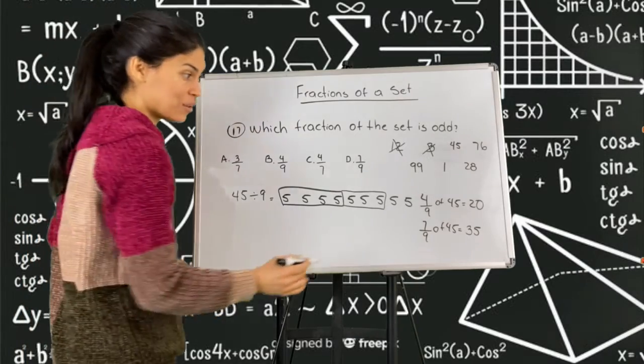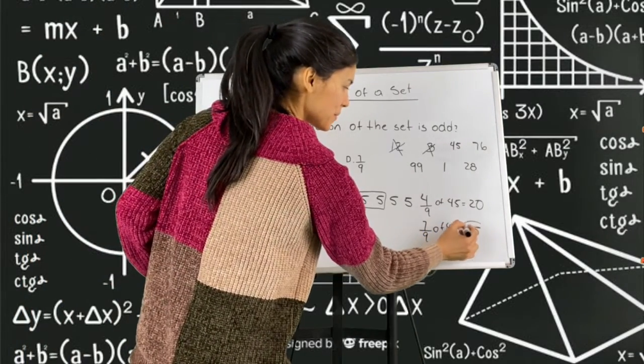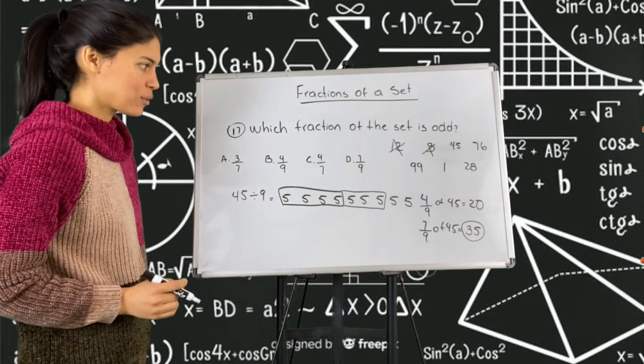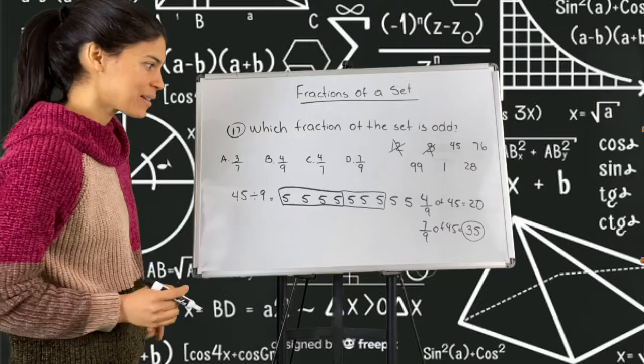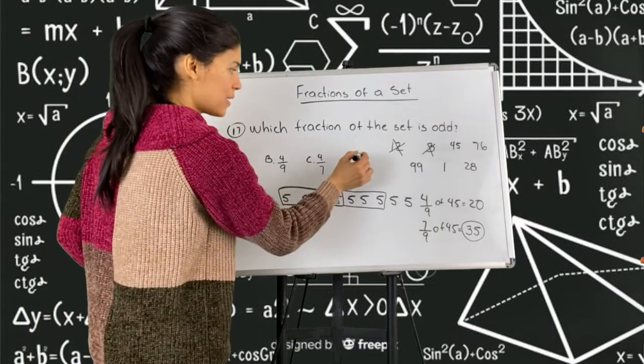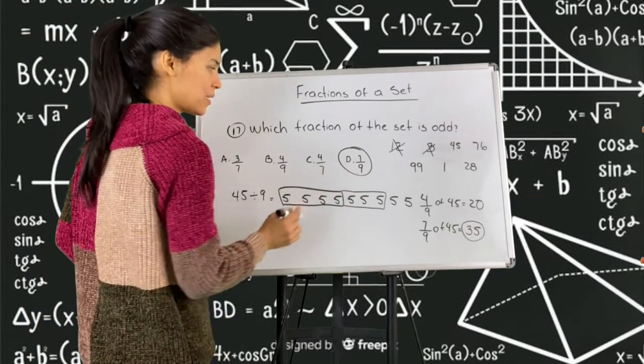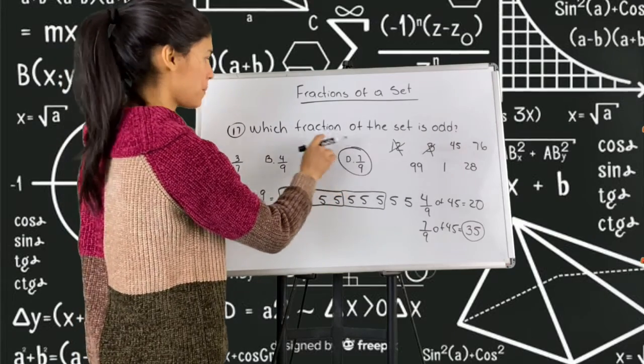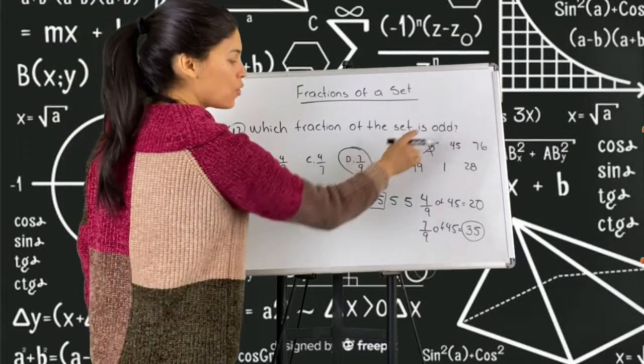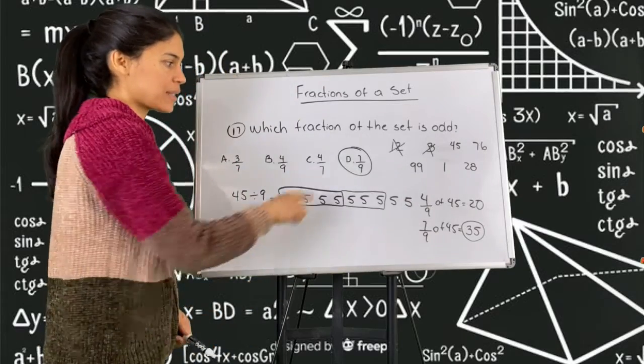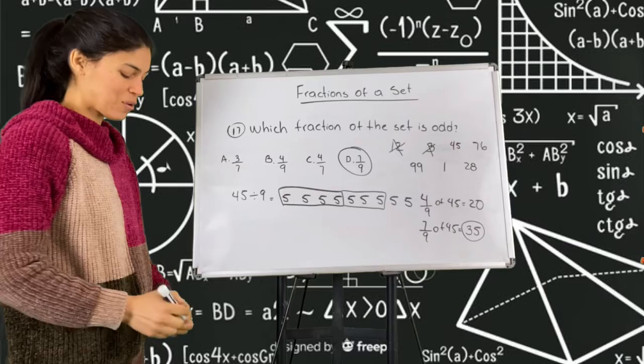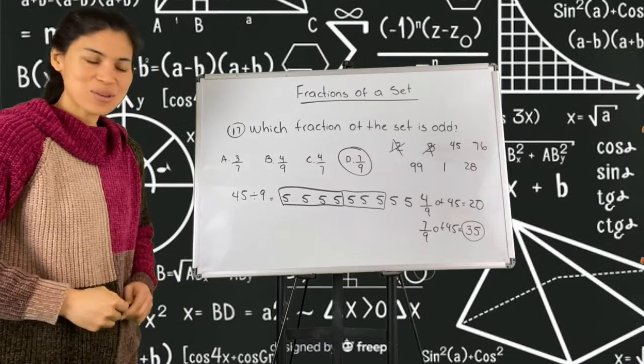Now 35 is an odd number because it's not divisible by two. So I can say then that this fraction, seven ninths out of 45, is an odd number. And that's how you do that.